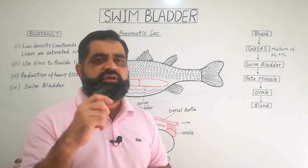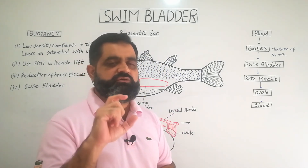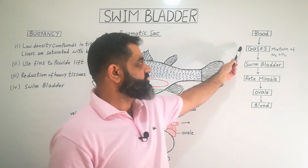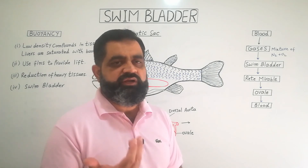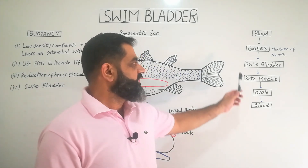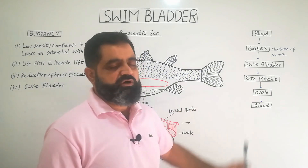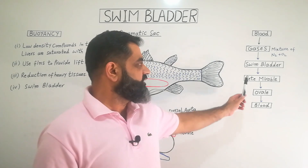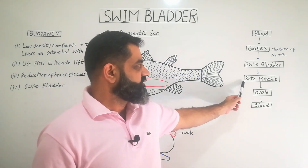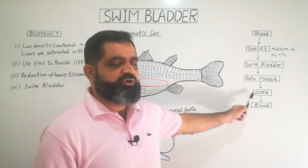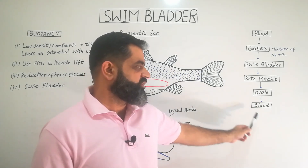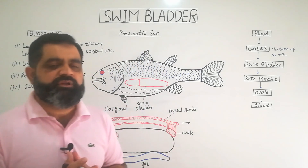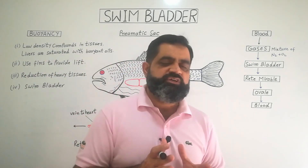To summarize: blood contains different gases, especially a great amount of oxygen and also nitrogen. These gases — a mixture of nitrogen and oxygen — diffuse into the swim bladder with the help of the rete mirabile, which is the network of capillaries also known as the gas gland. From the swim bladder, gases go back into the ovale, and from the ovale these gases are transported back into the blood, completing the circulation.